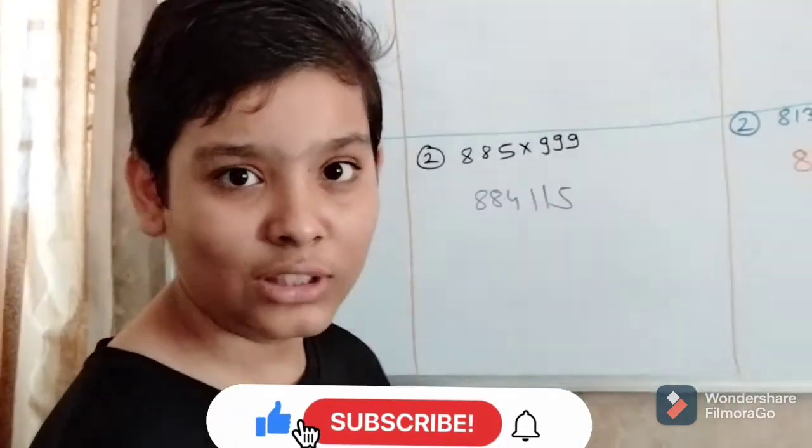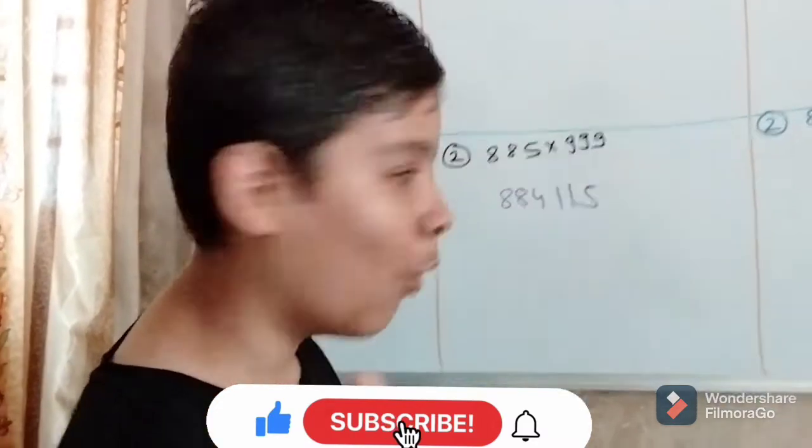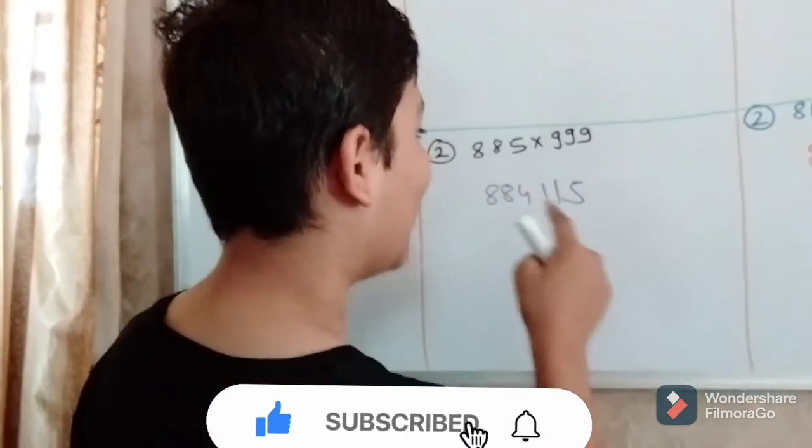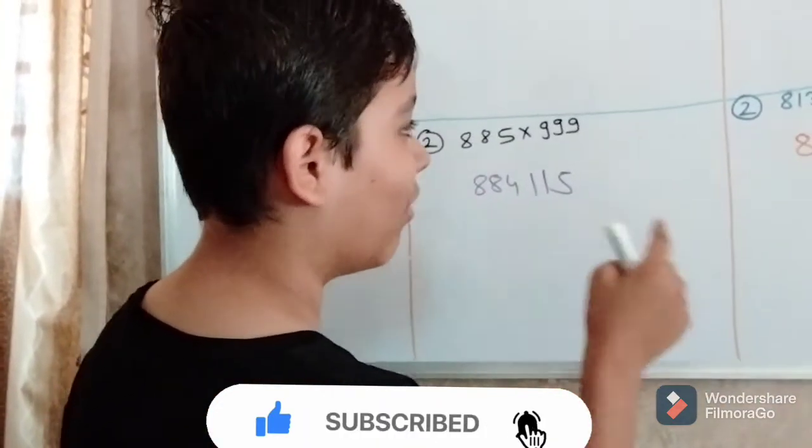885 minus 1 is equal to 884. And 999 minus 884 is equal to 115.